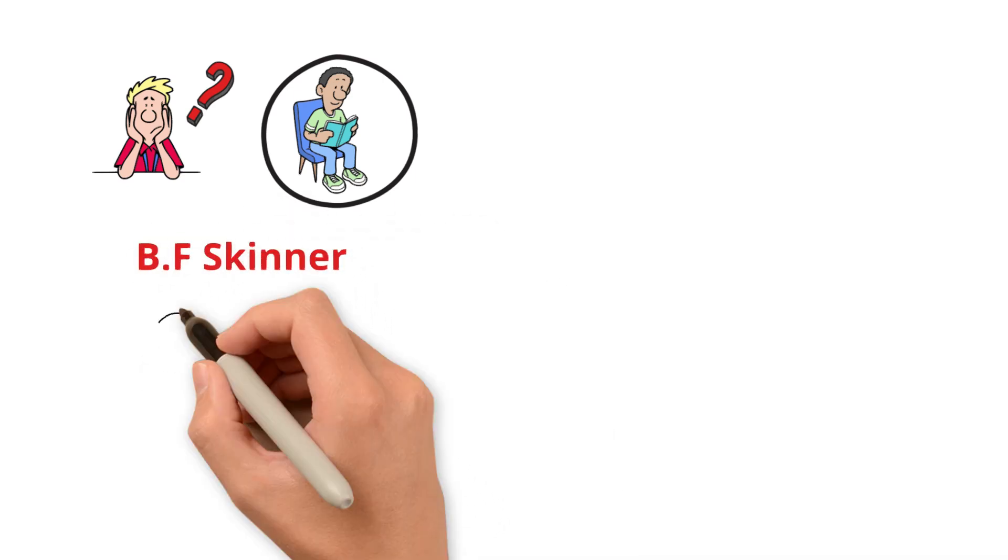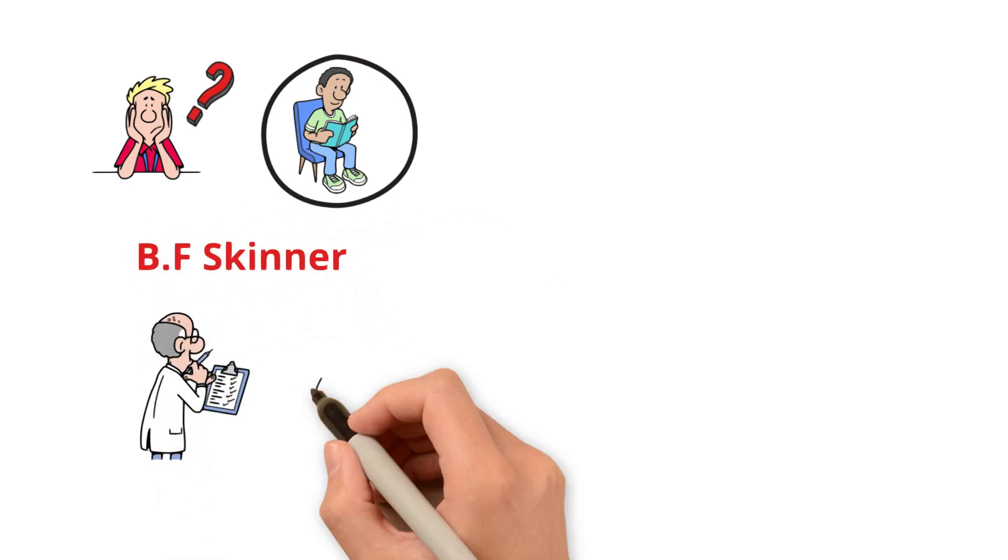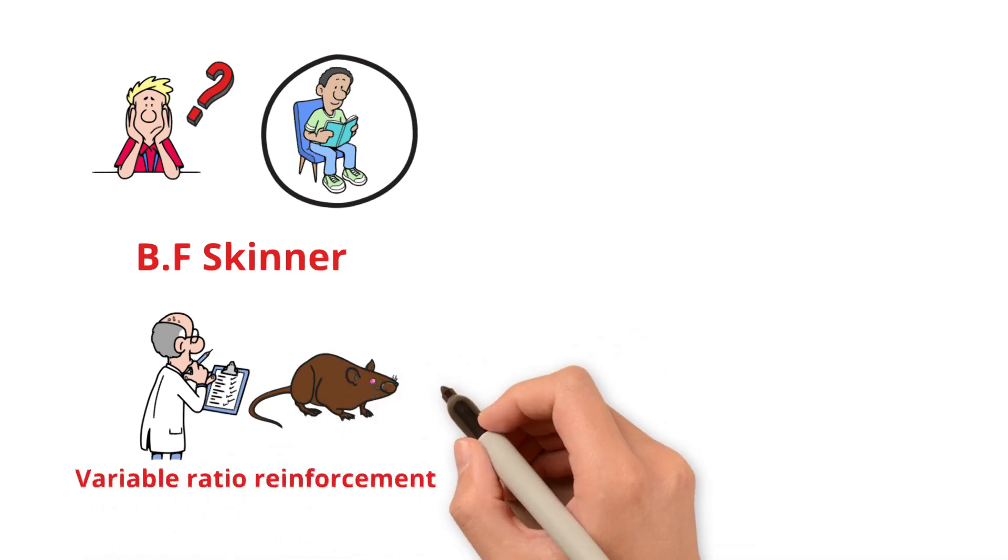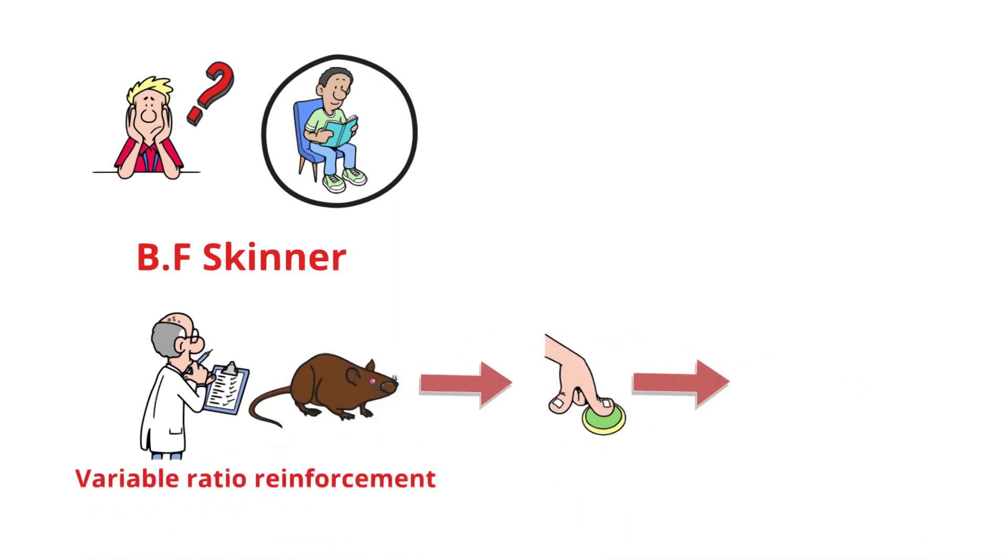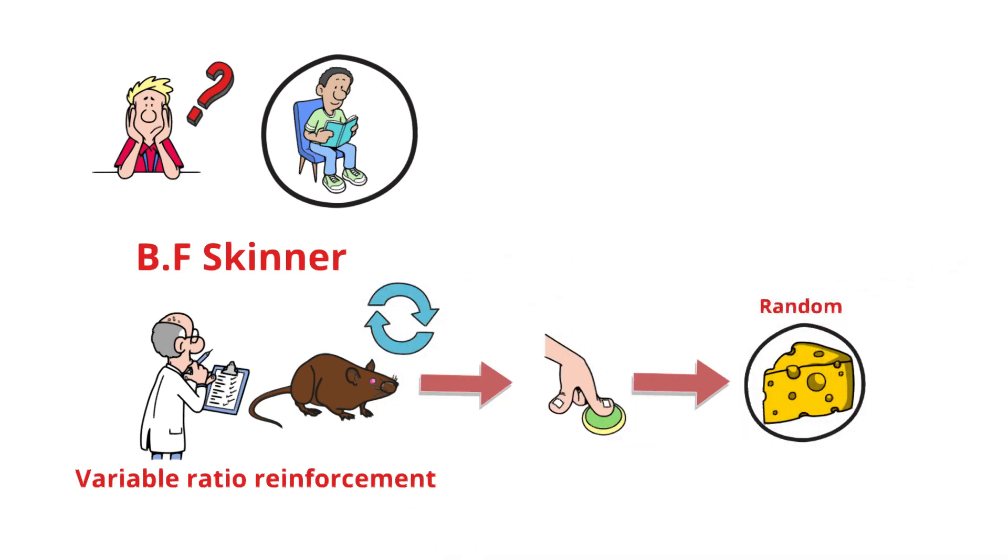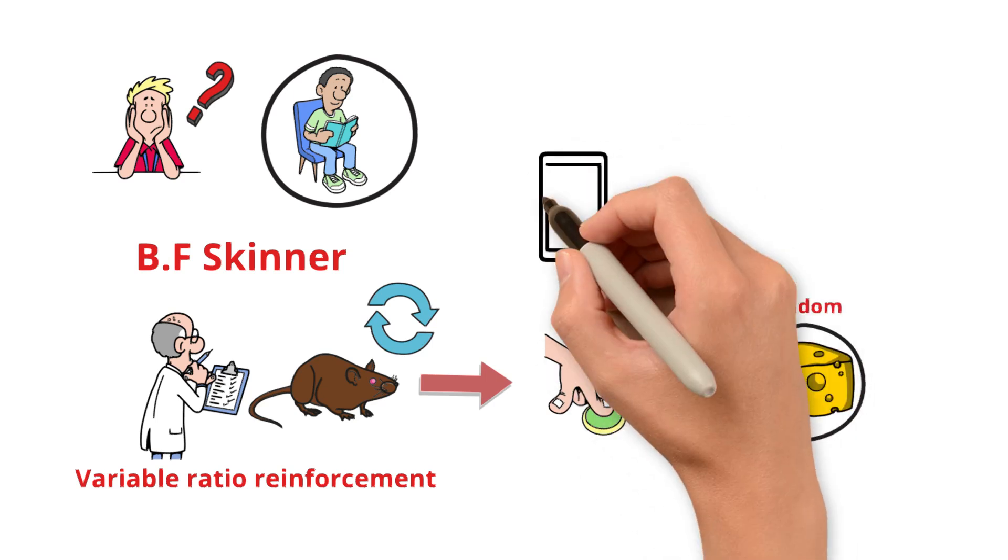You've probably heard of B.F. Skinner, right? He's the psychologist who experimented with mice using variable ratio reinforcement, a method that made the mice keep pressing a lever over and over again to get a treat. The trick? The rewards were random, which made the mice obsessed with pressing the lever.